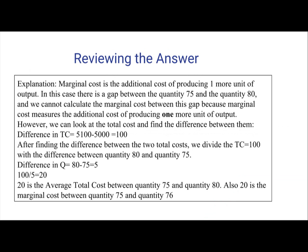Marginal cost is the additional cost of producing one more unit of output. In this case, there is a gap between the quantity 75 and the quantity 80. And we cannot calculate the marginal cost between this gap because marginal cost measures the additional cost of producing one more unit of output. We can't just find the marginal cost between 80 and 75 by just simply dividing it.